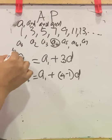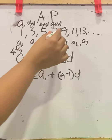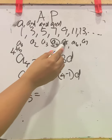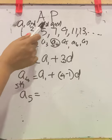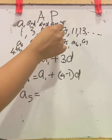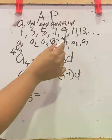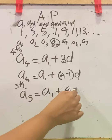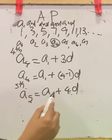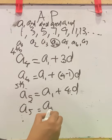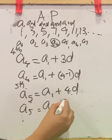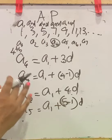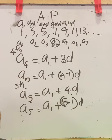This is the fourth term. Now what about the fifth term? A5 equals A1 plus 4D — that is A1 plus (5 minus 1) times D. So to get the nth term, we can generalize this. If we don't know the term, that is AN, the N can be 1, 2, 3, 4, 5, 6, 7, or any number.